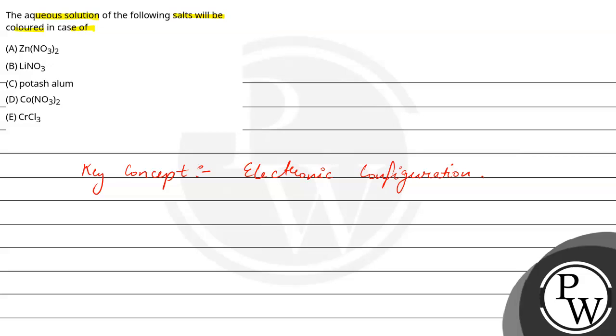Now let's check the electronic configuration one by one. First is Zn(NO3)2. We can see zinc two positive is Argon 3d10, so the number of unpaired electrons is zero. If the number of unpaired electrons is zero, we don't show this color.